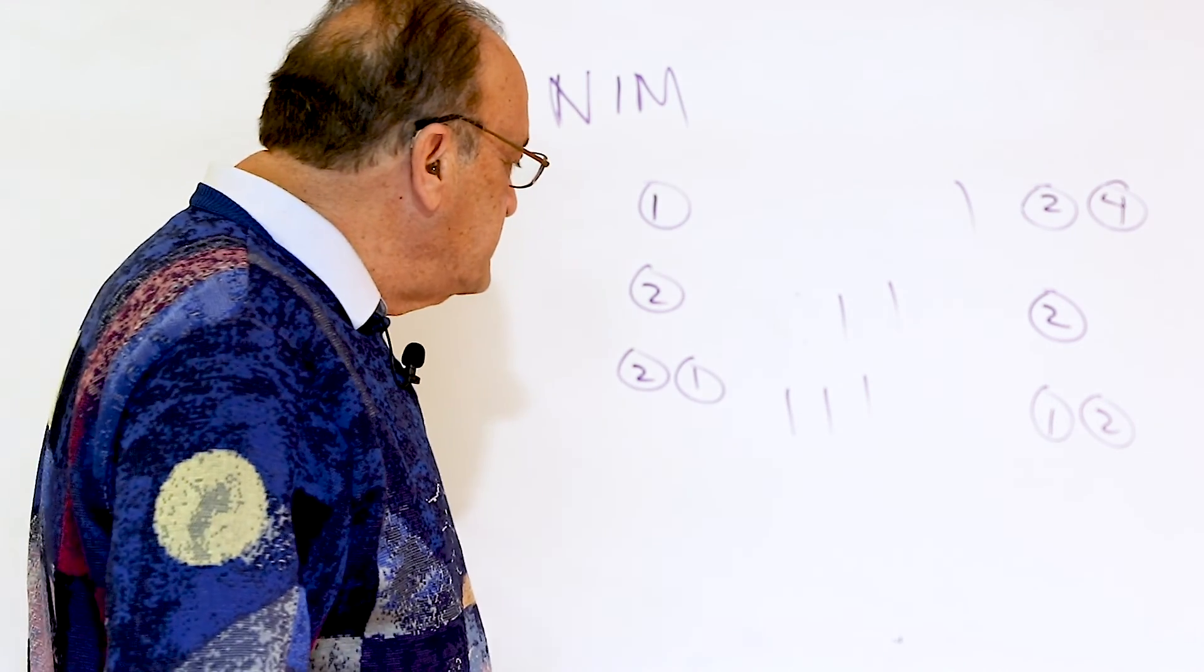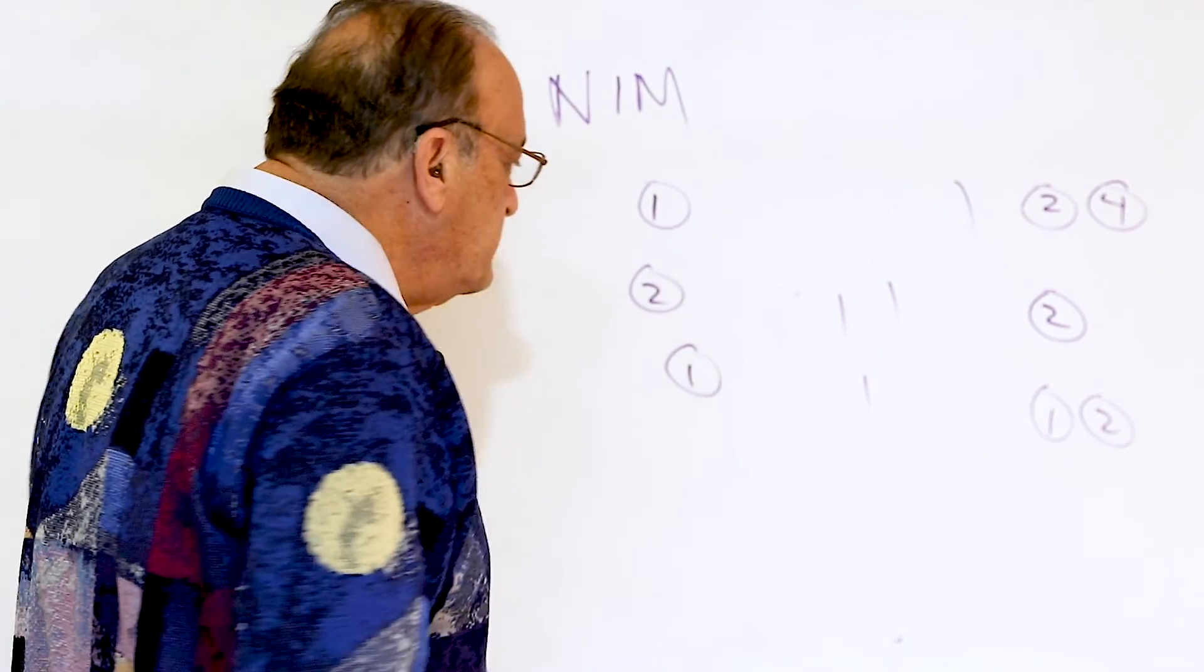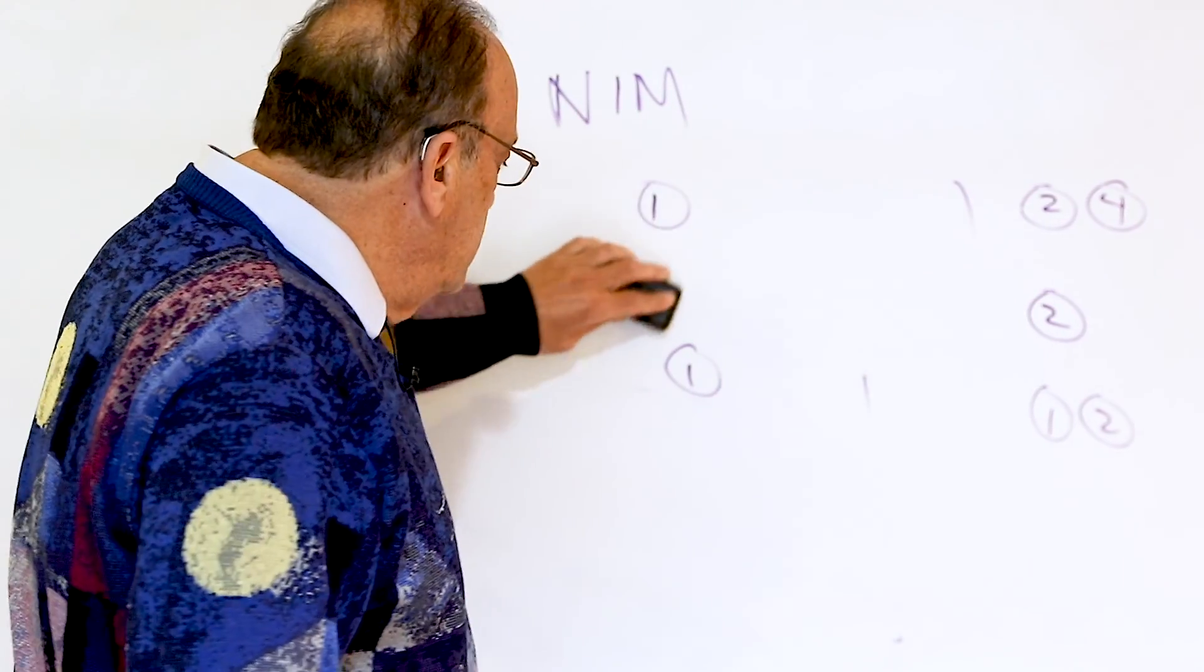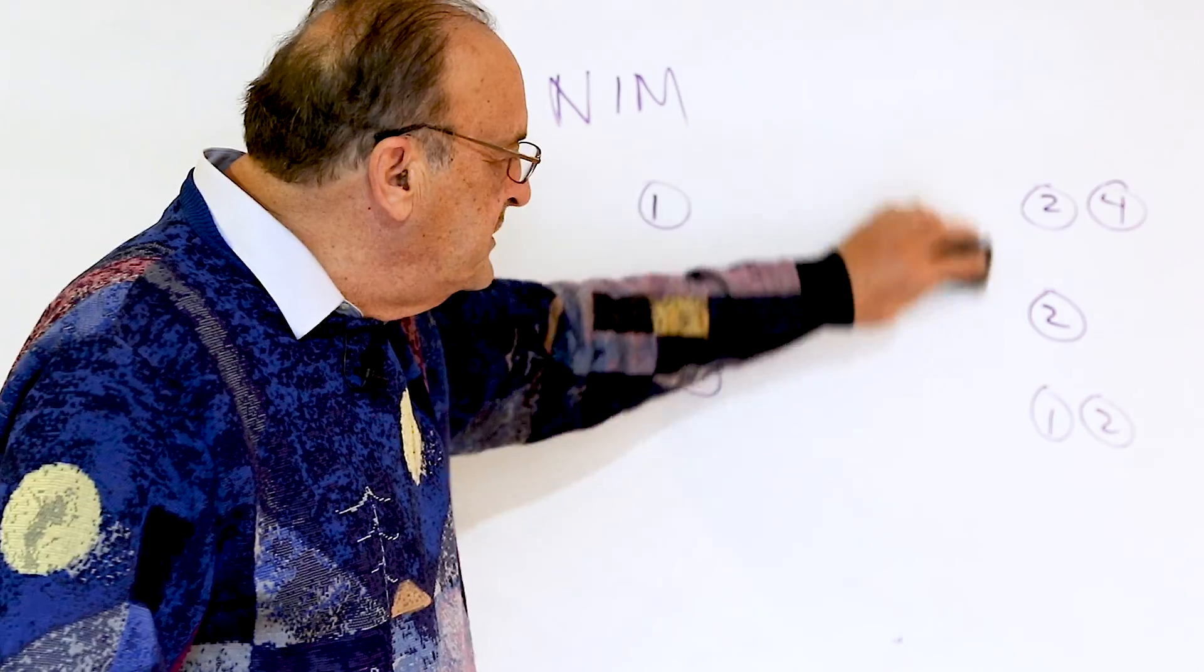Suppose your opponent does this, so change that to a 1. Your move is to take these 2. Everything's even again. Your opponent does this, and you take this, and you win the game.